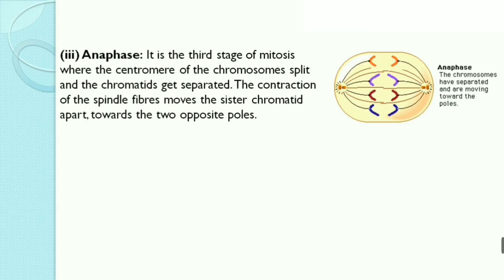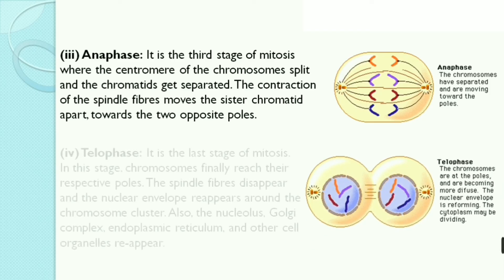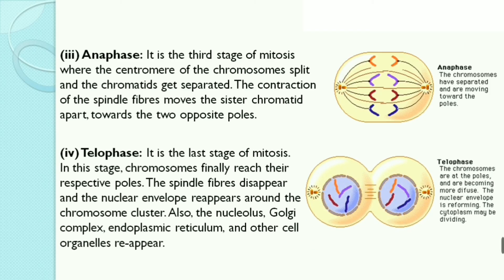Anaphase: it is the third stage of mitosis where the centromeres of the chromosomes split and the chromatids get separated. The contraction of the spindle fibers moves the sister chromatids apart towards the two opposite poles. Telophase: it is the last stage of mitosis. Chromosomes finally reach their respective poles, the spindle fibers disappear, and the nuclear envelope reappears around the chromosomes cluster.